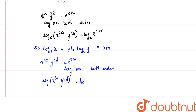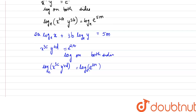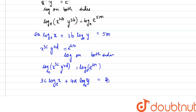That means we get: 3c · log_e(x) + 4d · log_e(y) = 2n. This is our second equation.